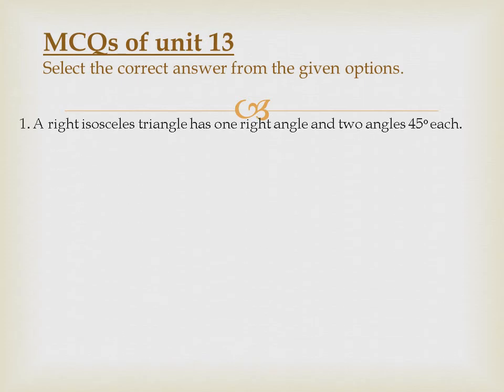MCQs of unit 13. A right isosceles triangle has one right angle and two angles 45 degrees each. Yes, if it's a right angle, it's a true statement.